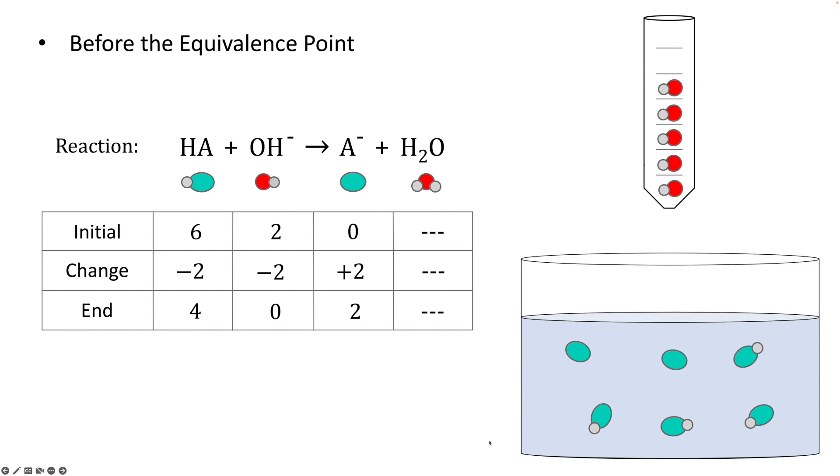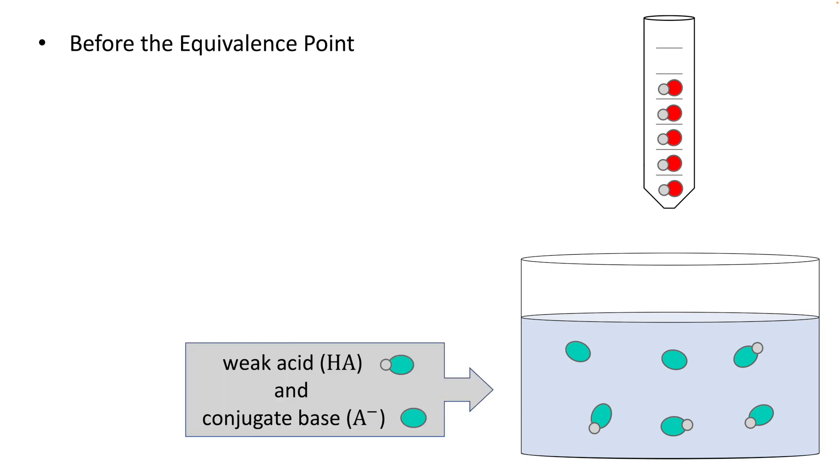Now if we look at what we've got, we have a weak acid and its conjugate base in solution. A weak acid and its conjugate base, if the two concentrations are not too far apart from each other, is a buffer. And we know how to calculate the pH of a buffer using the Henderson-Hasselbalch equation.